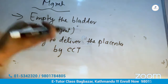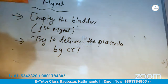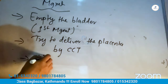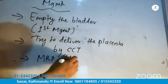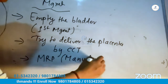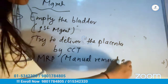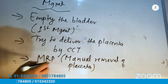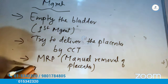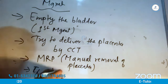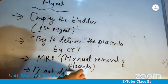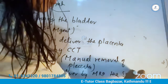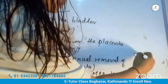You will try to deliver the placenta by CCT — controlled cord traction. In the CCT method, we will try placenta delivery. If not delivered by CCT, then attempt MRP — manual removal of placenta. If still not delivered, then surgical deprivation.